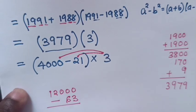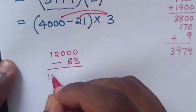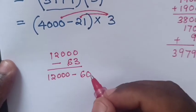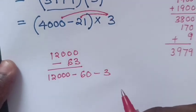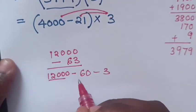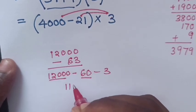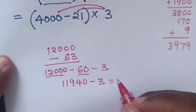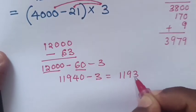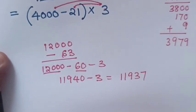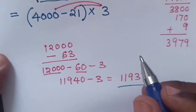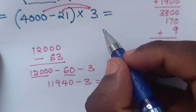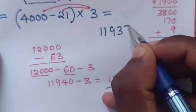So here is equals to 12000 minus 60 minus 3. So 12000 minus 60 is 11940, minus 3 is equals to 11937. So the answer of our solution is equals to 11937.